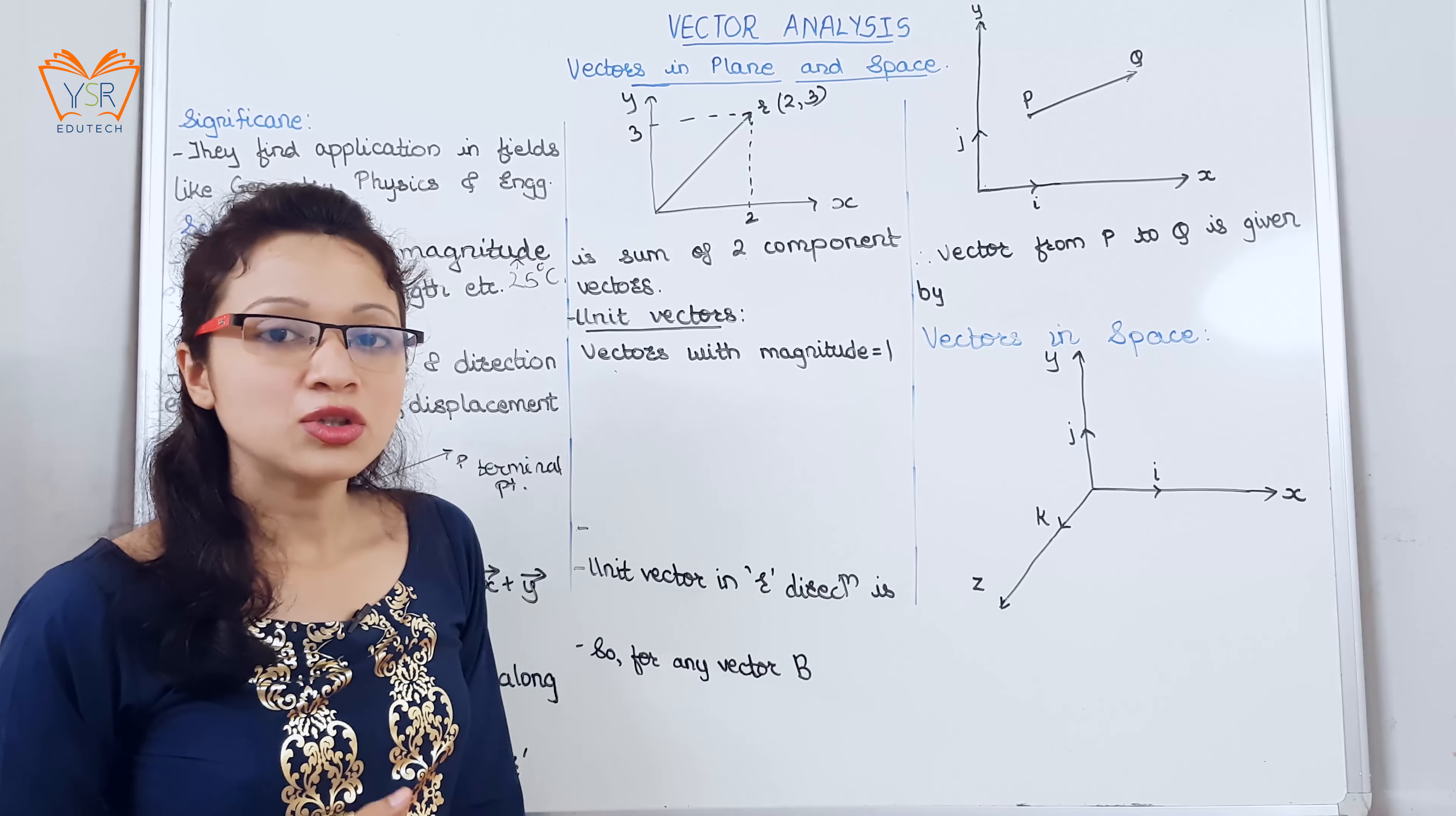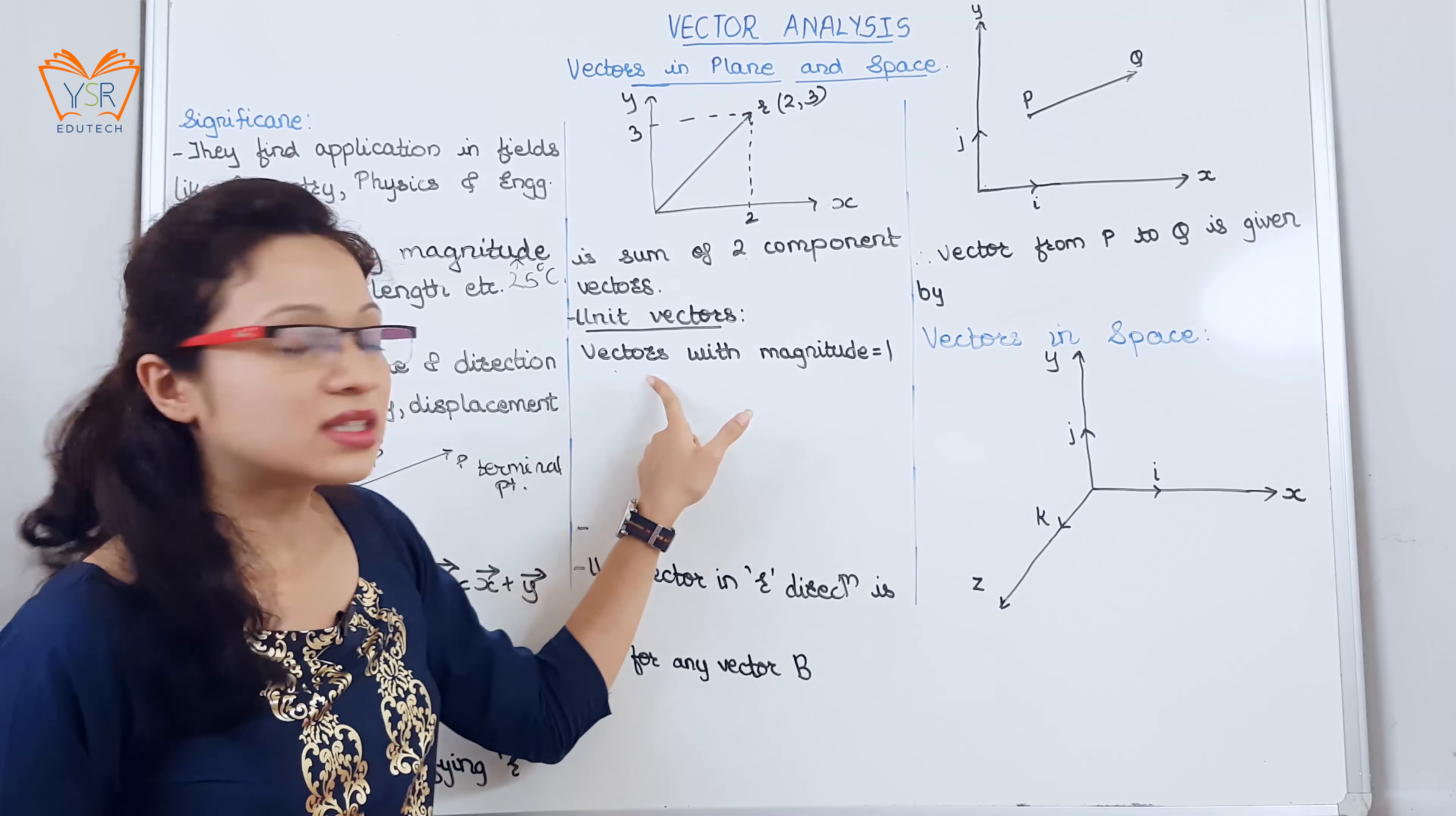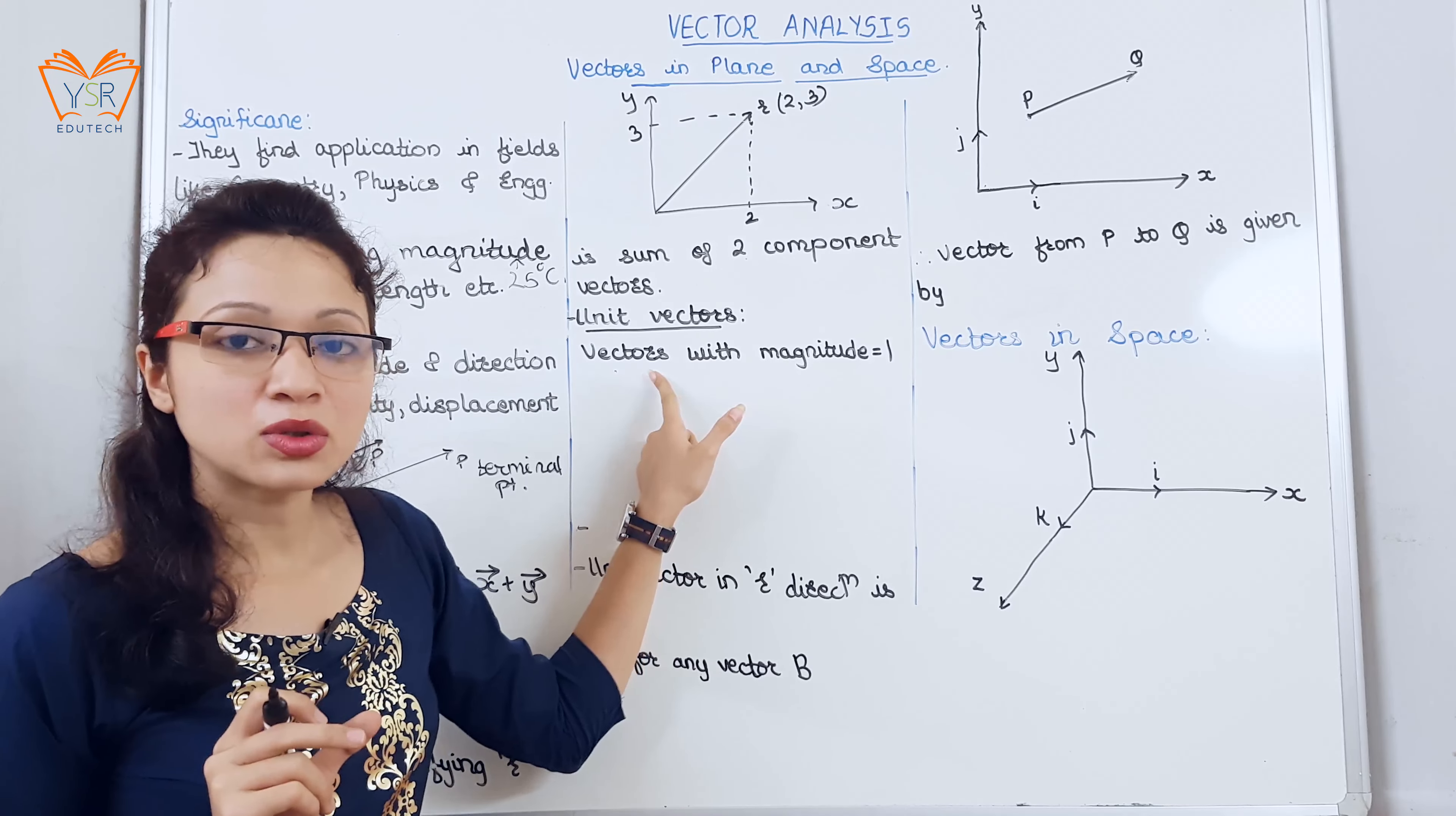Let us understand what are unit vectors. Unit vectors are nothing but vectors with magnitude equal to 1.